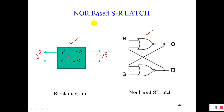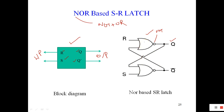This is the internal structure of the NOR-based latch. NOR is the combination of NOT plus OR gate. If we add a NOT gate along with the OR gate, then it becomes a NOR gate. We have two outputs which are complemented to each other — this is Q and this is Q bar. Q is fed back to the input of the first gate, and thus it becomes the NOR-based SR latch.